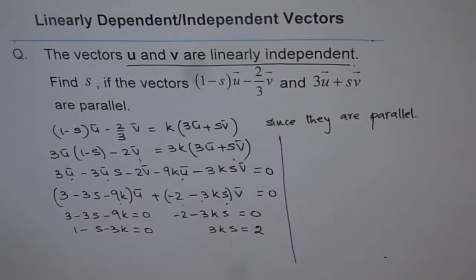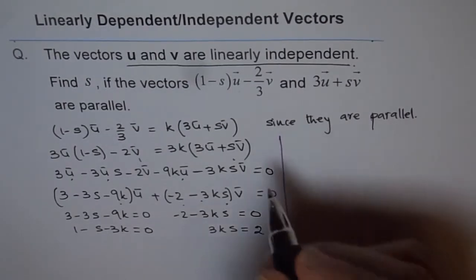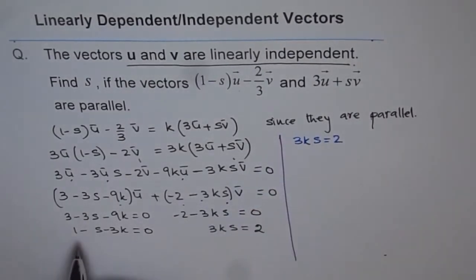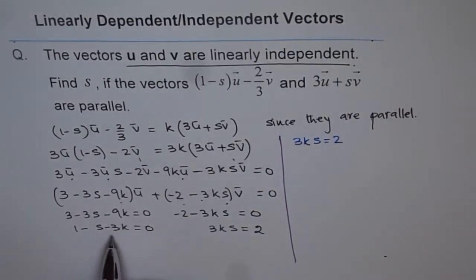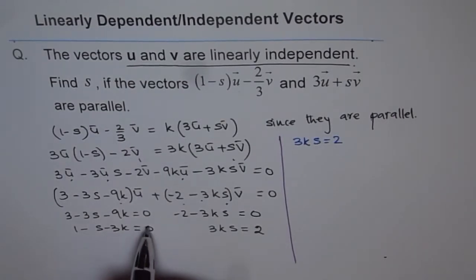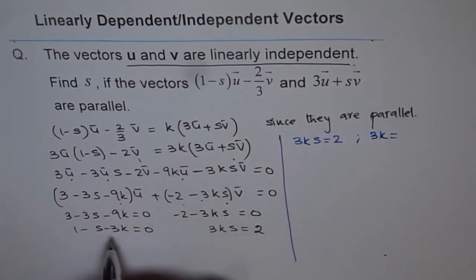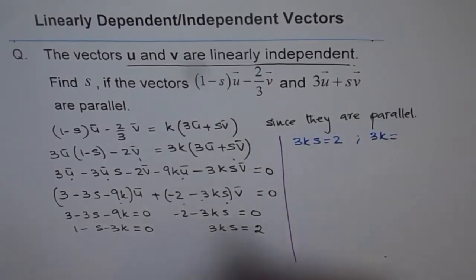So, what we have here is 3ks equals to 2. And from this equation, we can find what k is in terms of s. So, rather, we can write what 3k is. So, we can take this term on the right side. And we get 3k is actually equals to 1 - s.